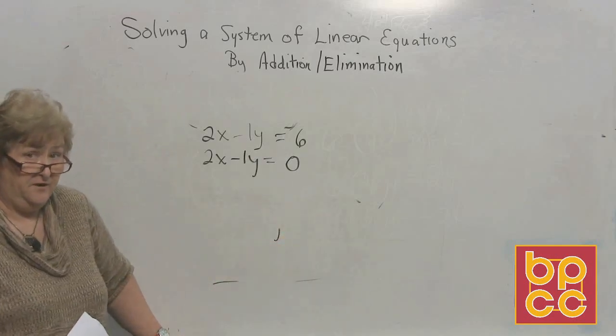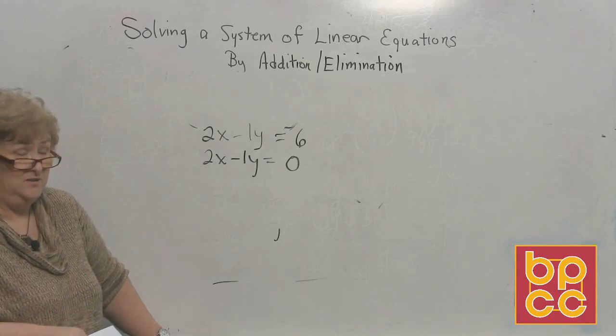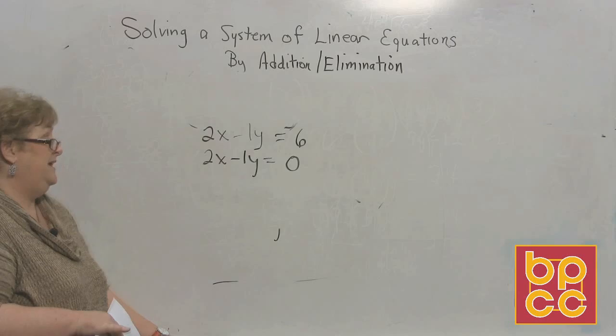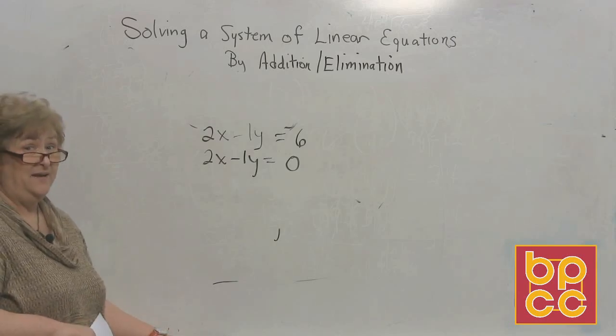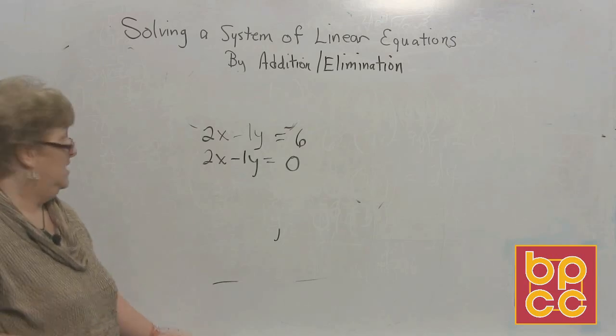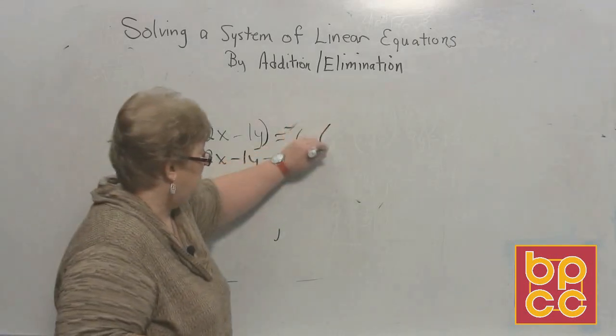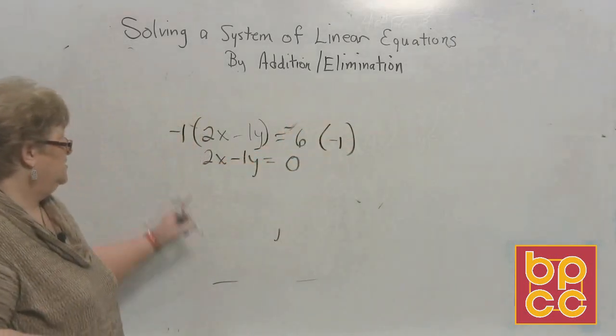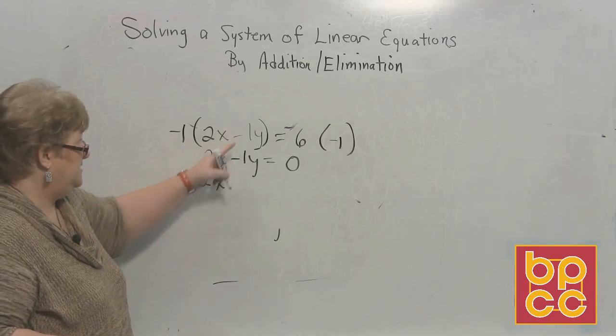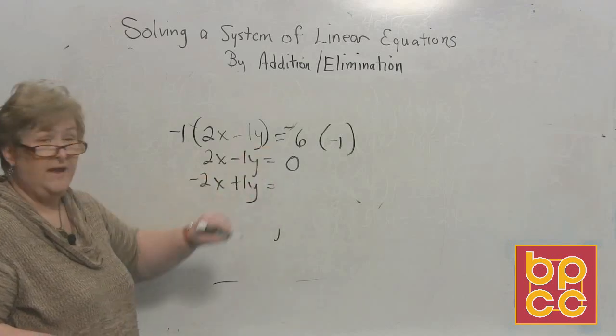This is what we have. We have 2x minus 1y equal 0. Now, I don't see anything disappearing here. I see a 2x and a 2x but that doesn't clear out because they're both positive. And I see the two negatives and that doesn't clear out either. So, if we wanted to clear out the x, I could multiply by a negative 1, couldn't I? Because if you multiply by a negative 1, it's going to make that 2 a negative 2. I could do that. So, I'm going to go ahead and multiply this by a negative 1. So, I now have a negative 2x and a negative times a negative is a positive 1y. And over here, we have a negative 6.